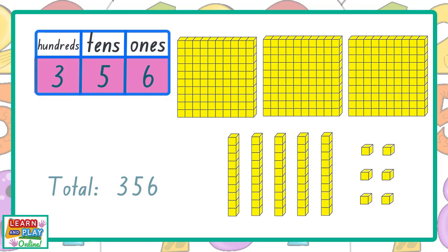So in total, we have 356 blocks altogether. Let's double check by counting. 100, 200, 300, 310, 320, 330, 340, 350, 351, 352, 353, 354, 355, 356.